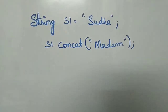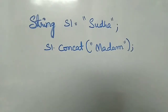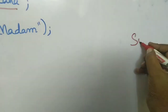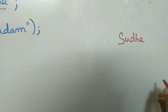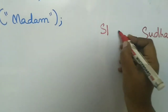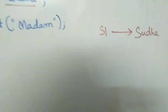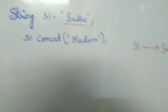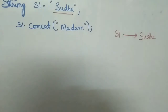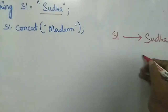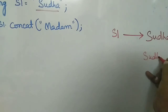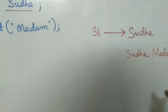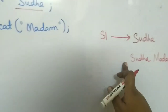Let's understand what immutable means. Say for example I have string S1 equal to 'Sudha'. What happens is inside the heap an object is created — the object is 'Sudha' — and S1 is the reference variable pointing to that object. In the second case, I call S1.concatenate('madam'), so another string 'Sudha madam' is created, but nothing is referring to this new object.